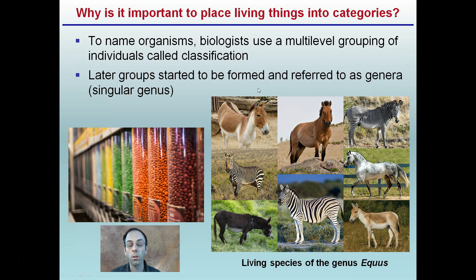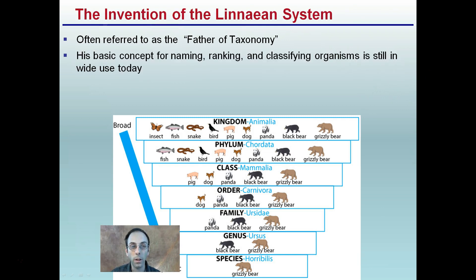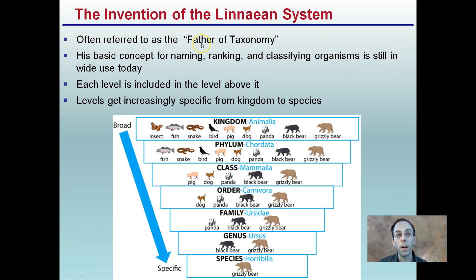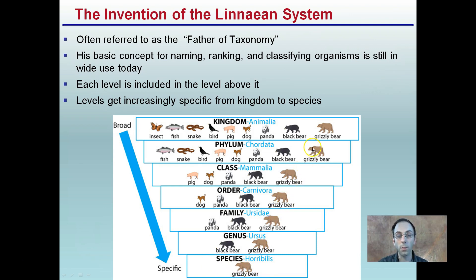Linnaeus is often referred to as the father of taxonomy. His basic concept for naming, ranking, and classifying organisms is still in wide use today. Each level is included in the level above it and gets increasingly specific from kingdom down to species. The kingdom is very broad — for example, animals — and we break it down further to mammals, all the way to a specific species like the grizzly bear. As you move up the levels, more distantly related animals are included, such as dogs, snakes, birds, and insects. At the genus level, just above species, only the grizzly bear and black bear appear — they are very closely related.